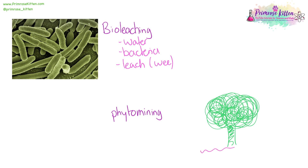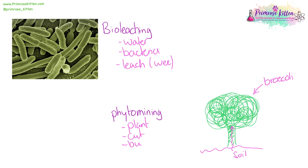Another method — phyto mining — is where we have lots of copper in the soil but at very, very low yield. So not enough for us to dig up the soil and get the copper out by reduction or electrolysis. We can put plants in — this is generally, believe it or not, broccoli. The plants will absorb the copper ions from the soil, we can then cut them down and burn them, and from the ash we can do electrolysis. The disadvantage of phyto mining is that plants grow very slowly.